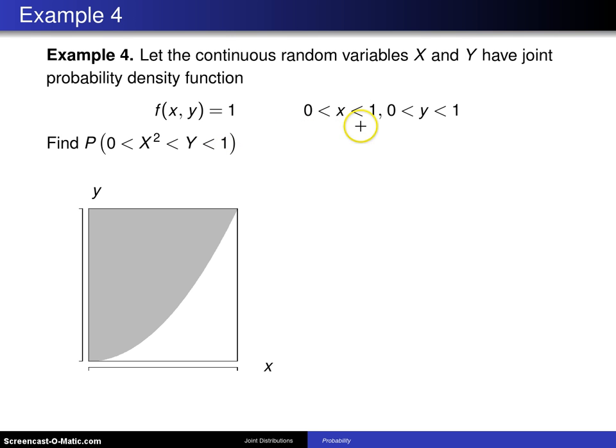Now the first thing to recognize is that the support is the unit square. And so that's what you see right here. This is x values ranging from 0 to 1, y values ranging from 0 to 1. So script A is the support.